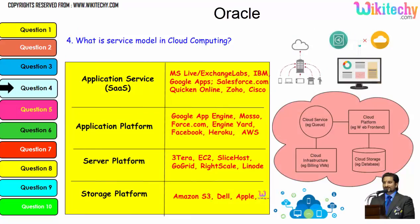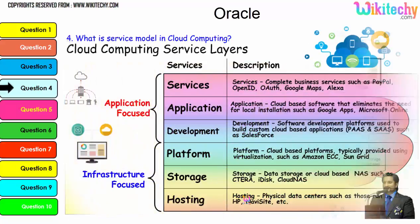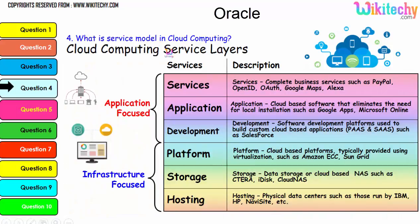Further looking at service models, these are typical examples. The application service, application platform, and server platform are key layers. The storage platform is provided by Amazon S3, Dell, and Apple. The important service layers are services, application, development, platform, storage, and hosting — with various examples under each. These are important services that will also be asked about in cloud computing interviews.